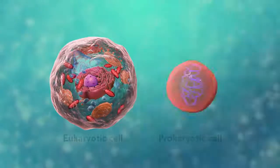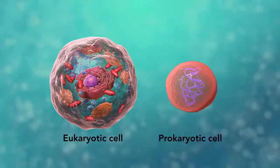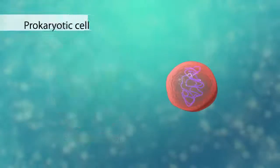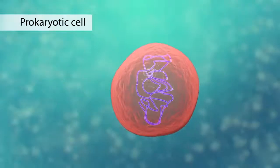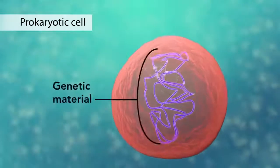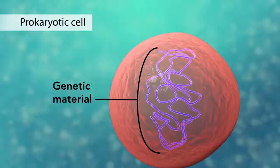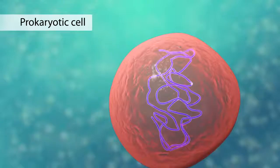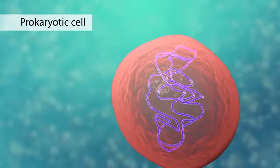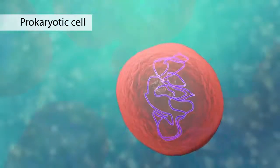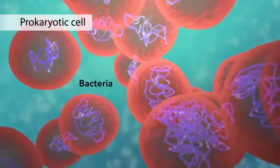The second category is prokaryotic cells. They don't have a nucleus or membrane-enclosed organelles. They do have genetic material, but it's not contained within a nucleus. Prokaryotic cells are always one-celled or unicellular organisms, such as bacteria.